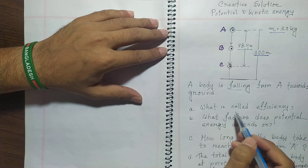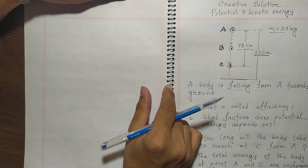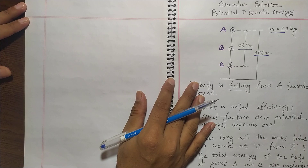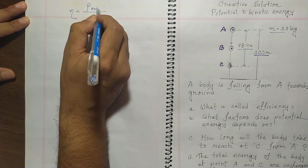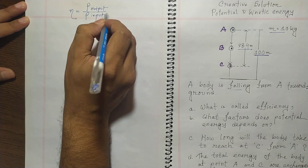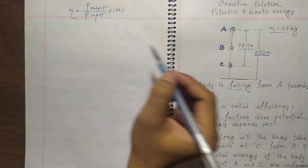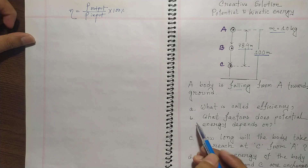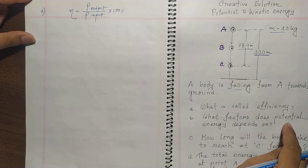The first question is: what is efficiency? We know that the ratio of available effective energy to the total given energy is called efficiency. So we can say that eta (η) is actually the power of output divided by the power of input, times 100 percent. This is the equation for efficiency.